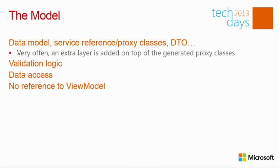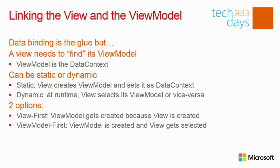The Model can be data classes, DTOs, or proxies generated from a service reference. In many cases it's not a good idea to directly bind on the raw proxy — often you write a layer on top of it as your model. The model never knows the ViewModel, the ViewModel never knows the view, but the other way around they do know each other: the view knows its ViewModel and the ViewModel knows its model, but not the reverse.